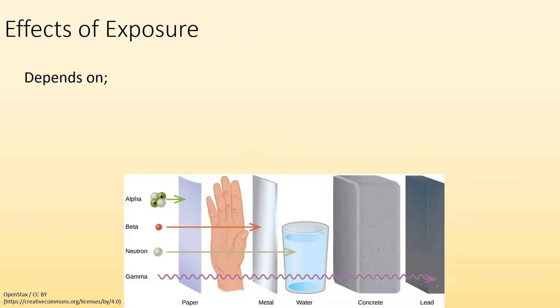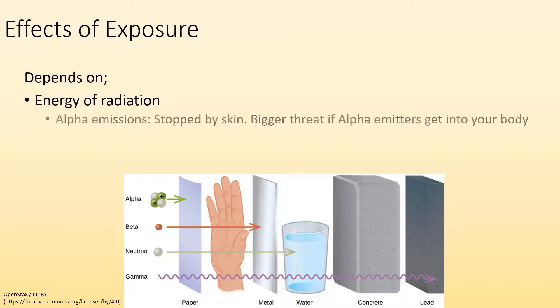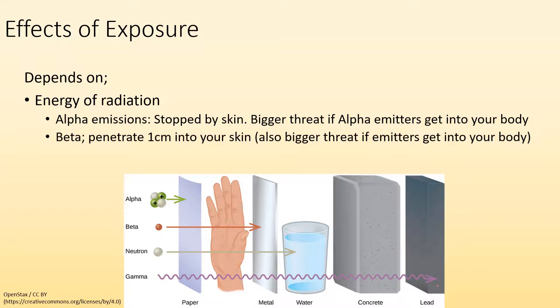All right, so effects of exposure. Let's talk about what are the effects. It depends on the energy of the radiation. Are we talking about alpha emissions? They're stopped by skin. They're more of a bigger threat if they get into your body. If you're breathing in these emitters, then they're inside your body so they can really wreak havoc. There's beta radiation that can penetrate up to a centimeter of your skin, so it's also going to be a bigger threat if it gets into your body. And then there's gamma. Skin's not stopping this kind of radiation. It can pass right through you. You need a whole bunch of matter to finally absorb it. This can affect your bone marrow. This stuff's not going to turn you into the Hulk. It's going to give you cancer. It's bad.